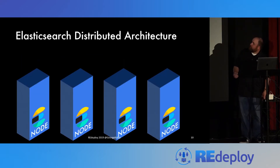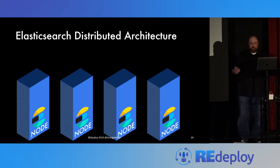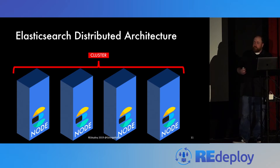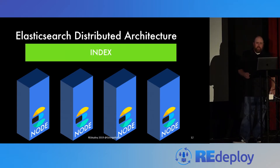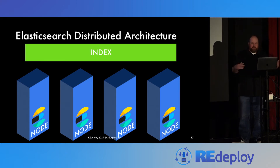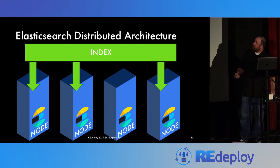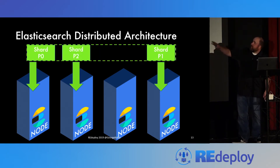Elasticsearch has a concept of nodes — the physical location where it stores data and where the Java process runs. This could be a physical machine, virtual machine, container, or in the cloud. Multiple Elasticsearch nodes create a cluster using a quorum algorithm. The logical collection of data — text or numerical data stored in JSON documents — is called an index. Data inside Elasticsearch is distributed across nodes in a partitioning method known as shards. As data is written to physical locations, it's partitioned out across particular nodes.